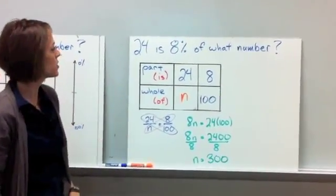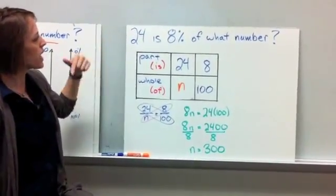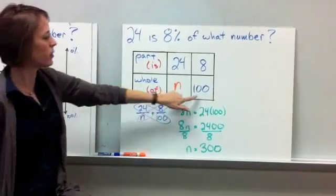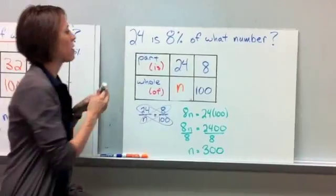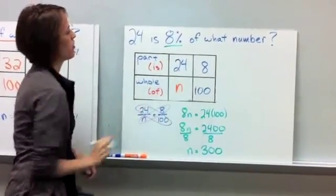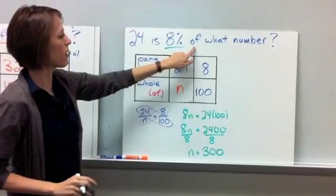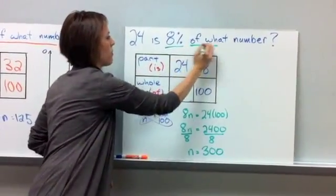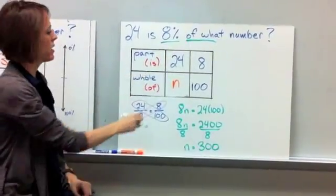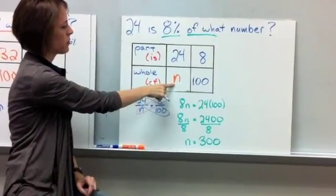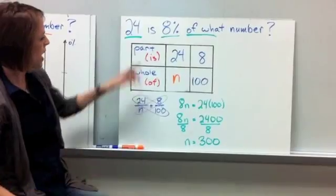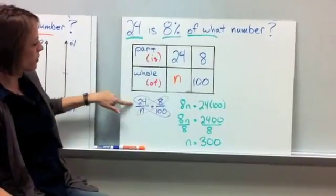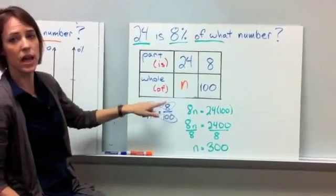Here's the answer to number 2. 24 is 8% of what number? So you should have known that you have 100 for the whole part of the percent. We're talking about 8%, so therefore our 8 goes over 100 here. We know that we're talking about of what number and what means X or N, so we have our N in the of part. And we're talking about 24 is the part that we know.